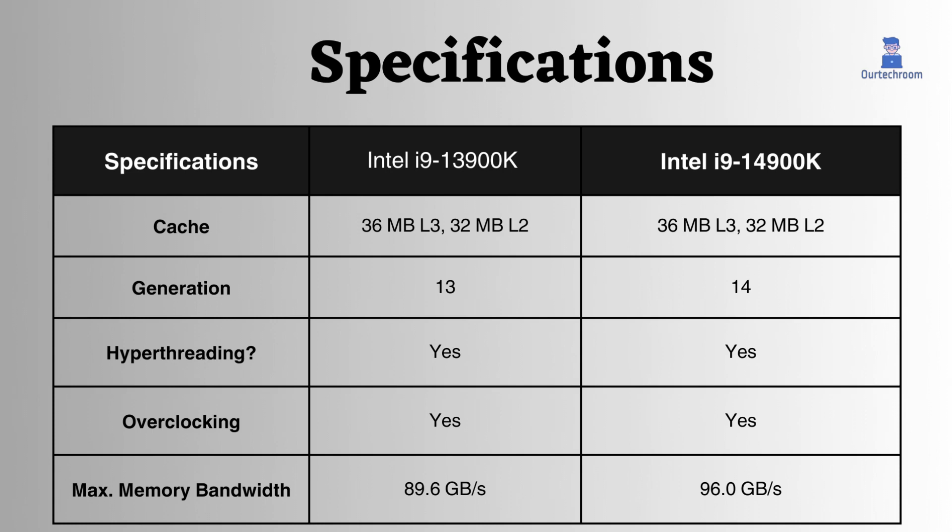They can both handle up to 128 GB of RAM, with the maximum memory bandwidth of the 14900K being 0.40 GB per second greater than the 13900K processor.